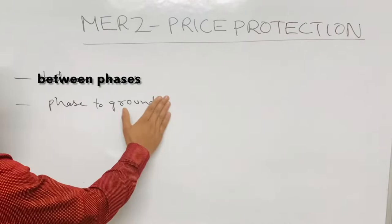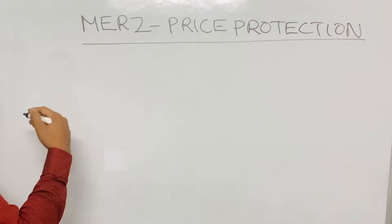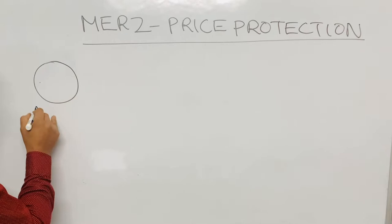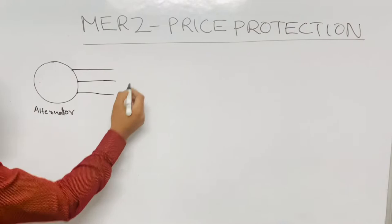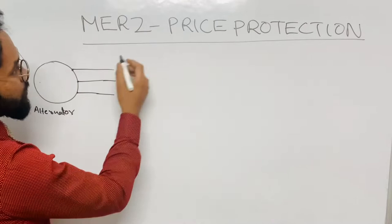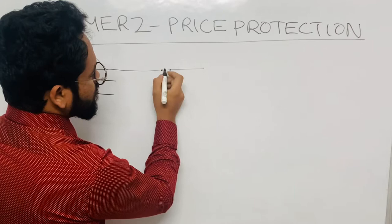Now let's discuss how this circuit works. For this circuit to work, we need two current transformers. I have made a separate session on current transformers — the link is in the description below. Suppose this is a three-phase alternator with three phases. I'll explain for one of the phases how Merz-Price protection is used.